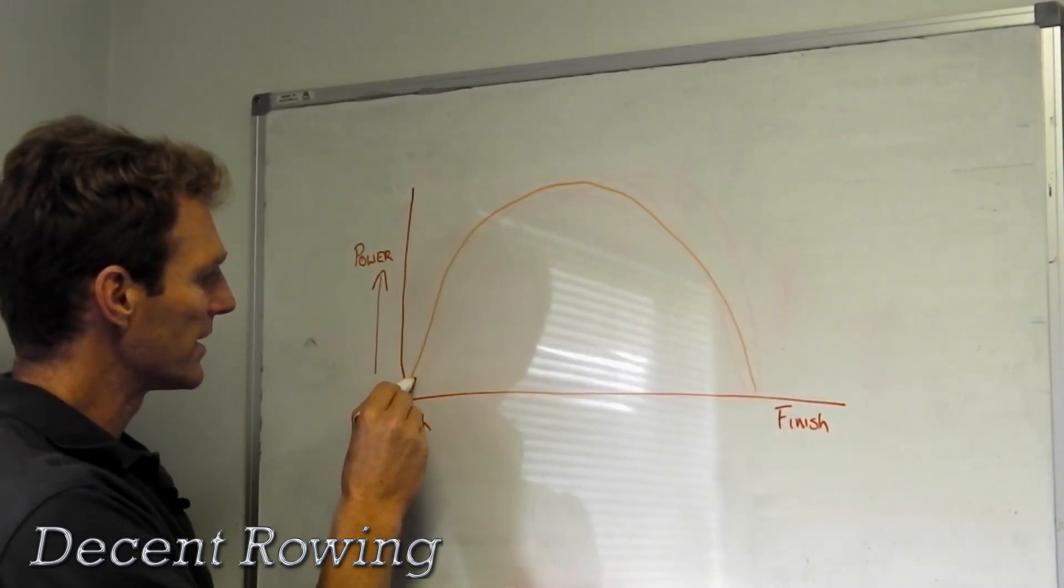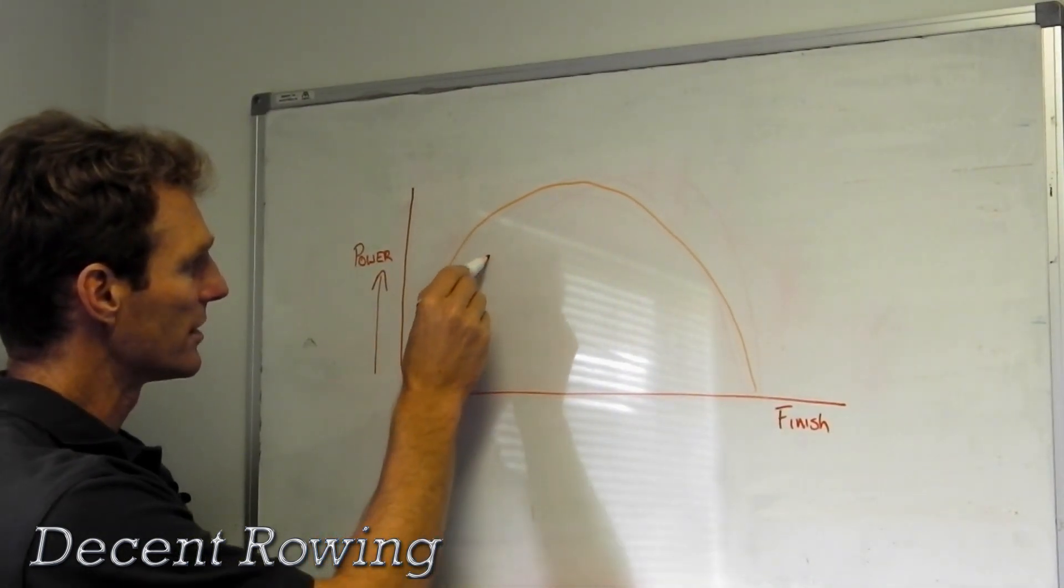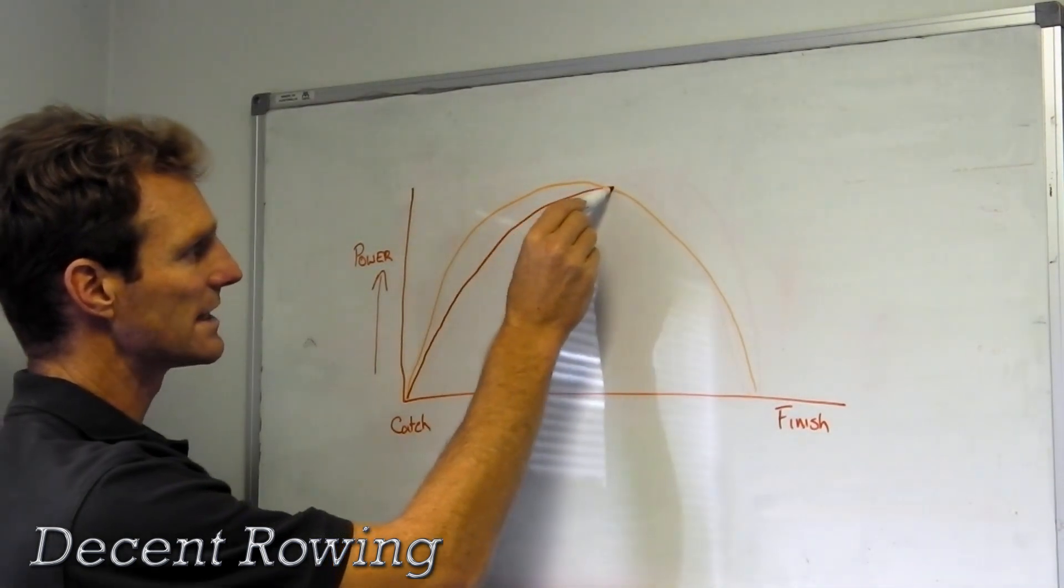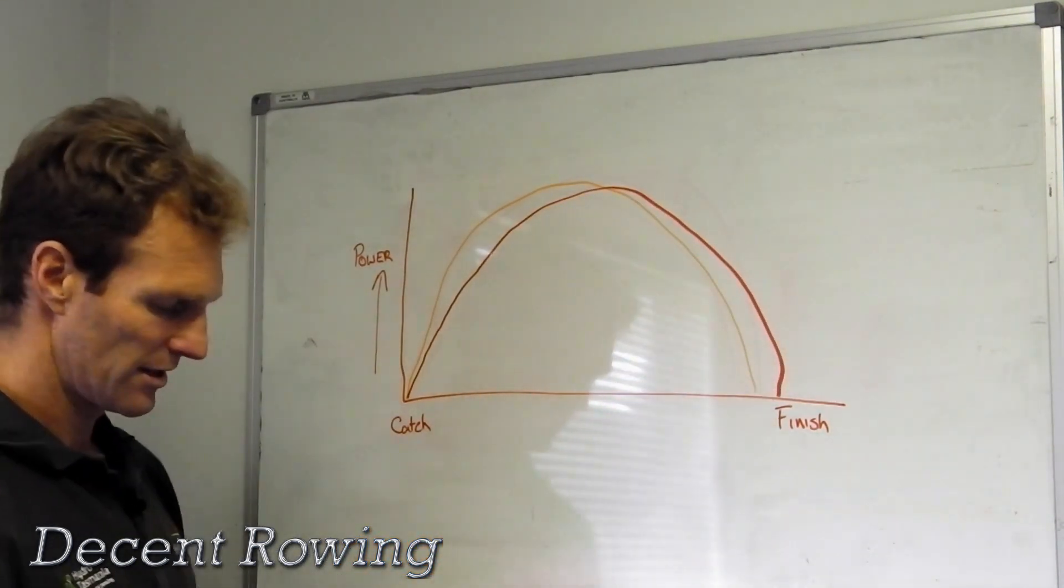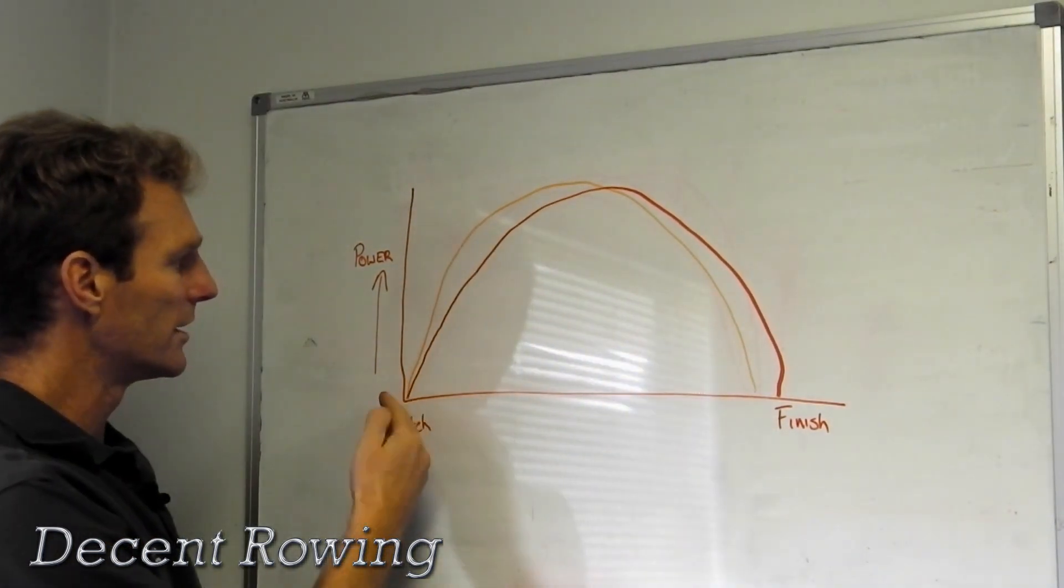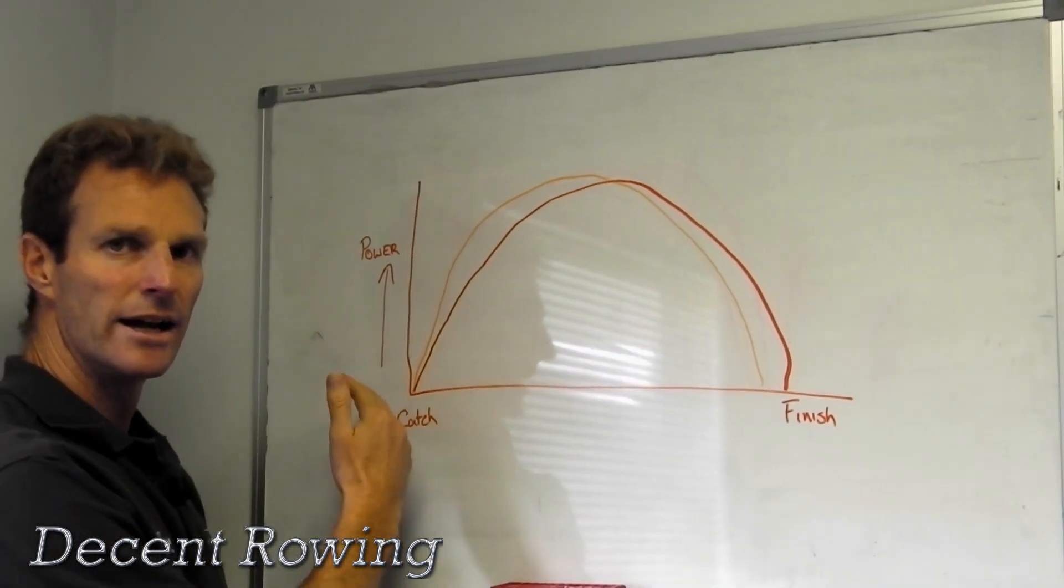The bowman would probably not be as dynamic as the stroke, but would have a good second half power phase and drive through the stroke. The idea of that is that the bowman puts his blade in and he holds the pressure against the stroke man.